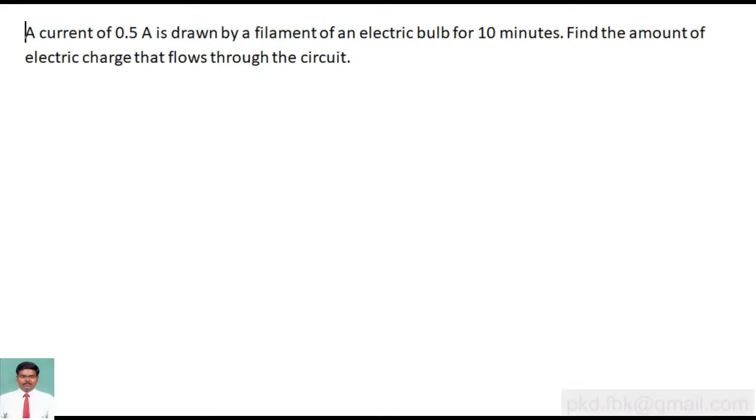A current of 0.5 amp is drawn by a filament of an electric bulb for 10 minutes. Find the amount of electric charge that flows through the circuit. Given: the current I is equal to 0.5 ampere.